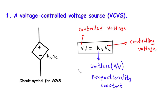Let's start by looking at the symbol for a VCVS. It is represented by a diamond-shaped block with two terminals. This symbol indicates that the voltage across the VCVS, which we'll call VD, is directly proportional to the controlling voltage, which we'll call VC.